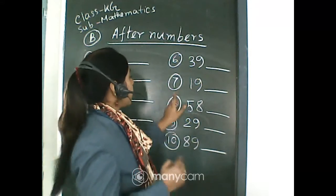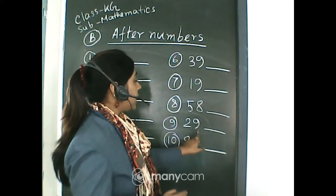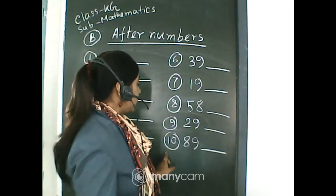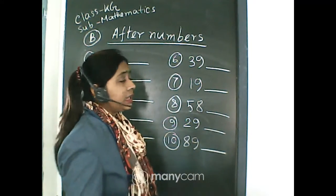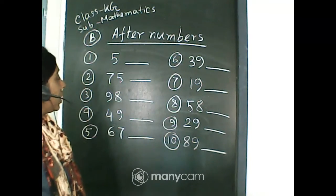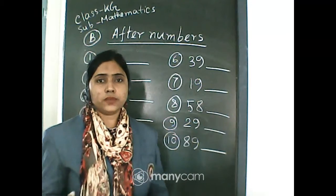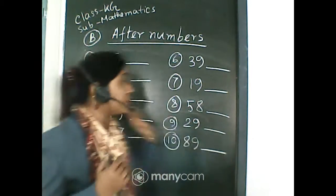Number 8 is 58, number 9 is 29, and the last one is number 10: 89. Here you will write the after number. So, 1 to 10, you will write the after numbers. This is activity B: after numbers.